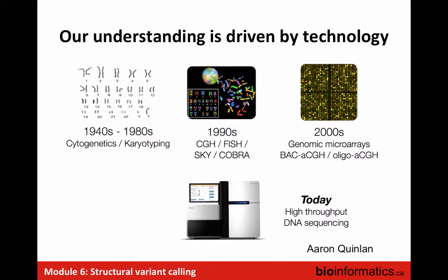Our ability to detect structural variants follows the technology. It started with karyotyping — looking at very gross chromosomal abnormalities. CGH and FISH gave slightly more precise information, but you still didn't really know which genes were affected in detail, and small events were being missed in the early 2000s. Microarrays — especially array CGH — were then used for much more precise profiling of copy number change. Now with sequencing, you would think we can detect everything, but the challenge is really in the informatics analysis of these data.